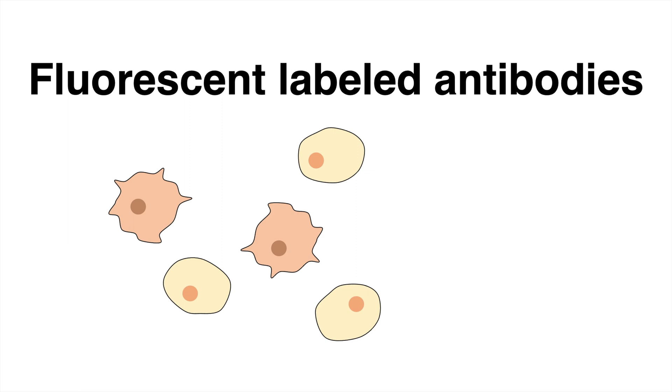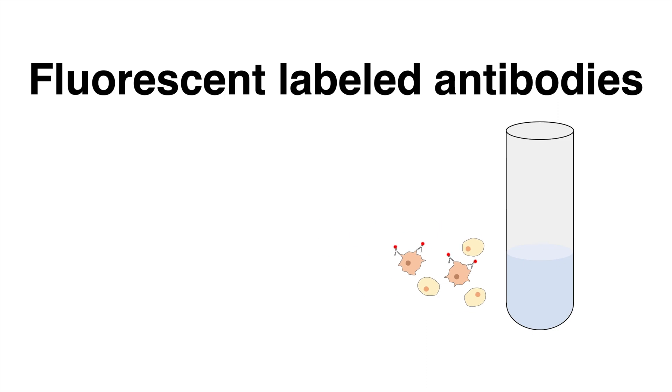When you have a heterogeneous cell suspension and you want to investigate which subpopulations express a cell surface protein, fluorescent labeled antibodies come into play. They bind specifically to cells with the protein of interest.